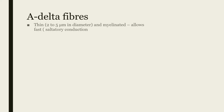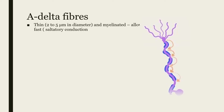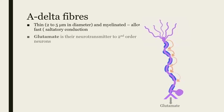To begin with, I will cover A-delta fibers. A-delta fibers are thin, 2 to 5 micrometers in diameter, and myelinated. This allows fast, saltatory conduction. Glutamate is their main neurotransmitter to second-order neurons.